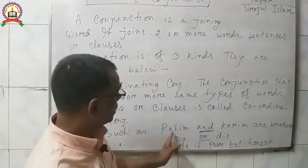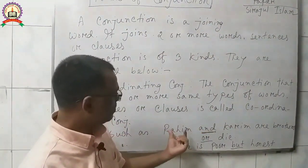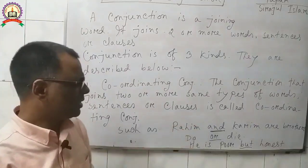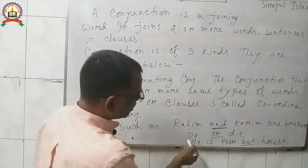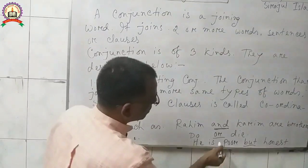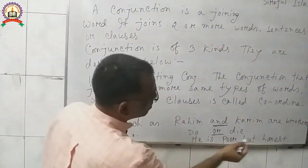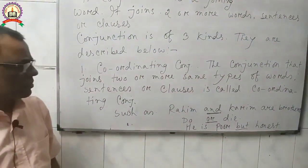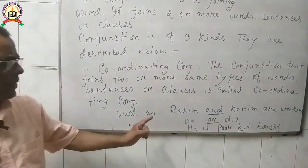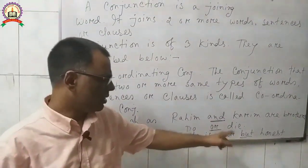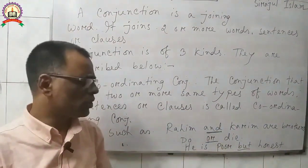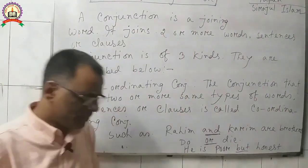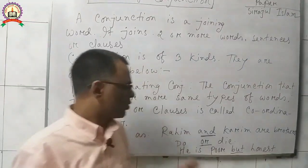For example: 'Rohim and Kodhim are brothers.' Here, 'and' is a coordinating conjunction — it joins 'Rohim' and 'Kodhim,' which are the same parts of speech, same number, same gender. Also: 'Do or die' — here 'or' is a conjunction. And 'but' is also a coordinating conjunction.